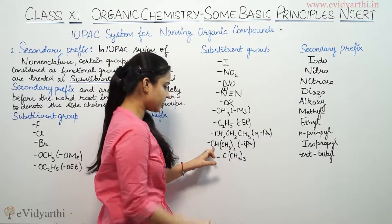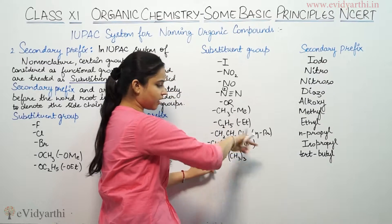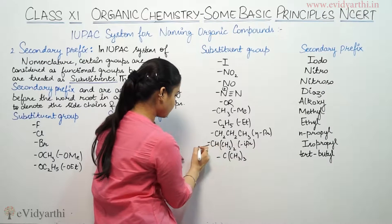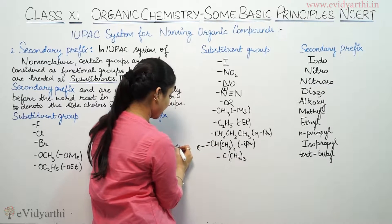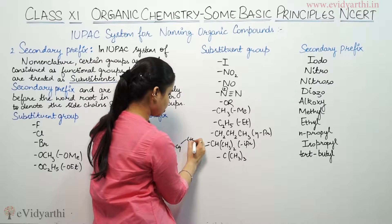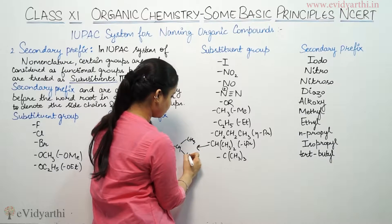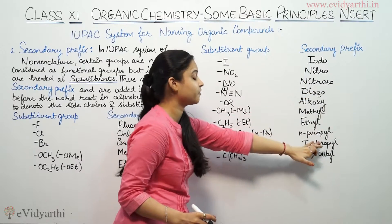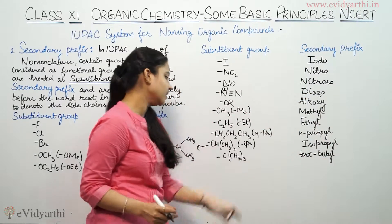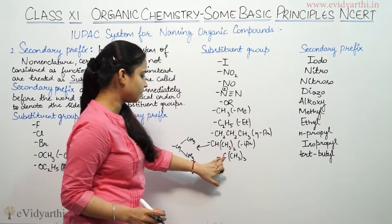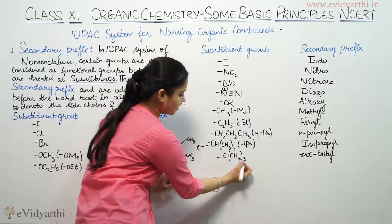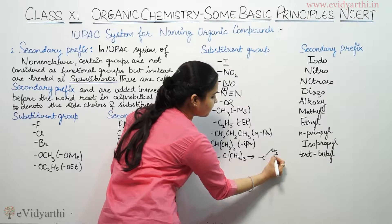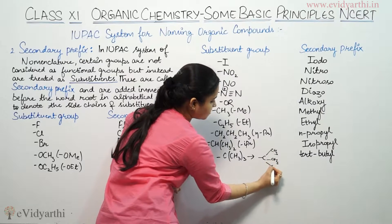Then CH — if it is a carbon with two carbons attached, meaning CH with one CH3 on one side and one CH3 on the other side — this is our isopropyl group. The secondary prefix naming for this is isopropyl. If three CH3 groups are attached to one carbon, that forms the tert-butyl group: C with CH3, CH3, CH3 attached.